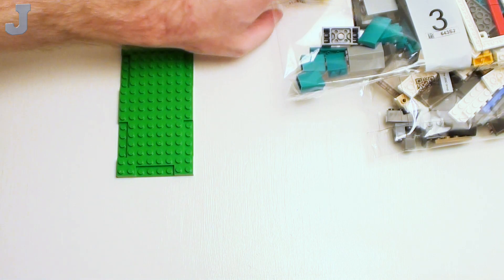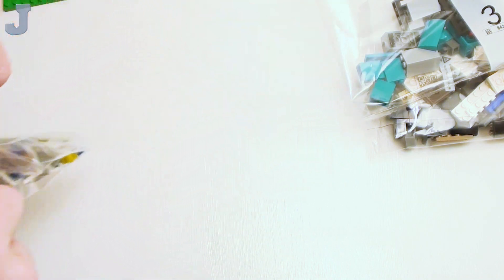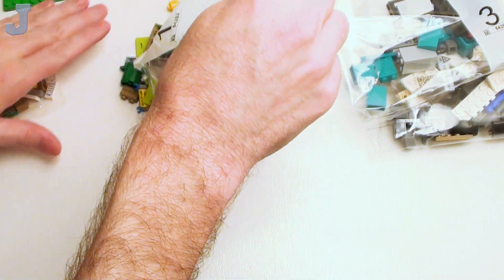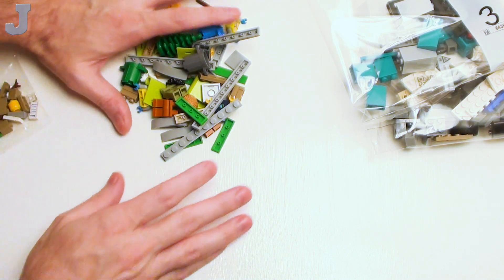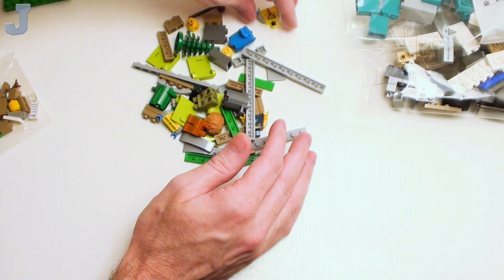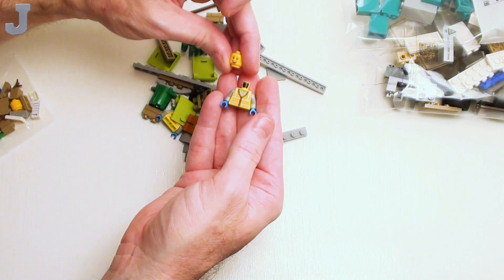We're going to start with bag one and see exactly what we get inside. I can see some good stuff already in there. First thing we have is a torso and a head.